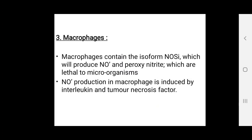Macrophages contain isoforms of nitric oxide synthase, which produce nitric oxide and peroxynitrite, which are lethal to microorganisms. Nitric oxide production in macrophages is induced by interleukins and tumor necrosis factors.